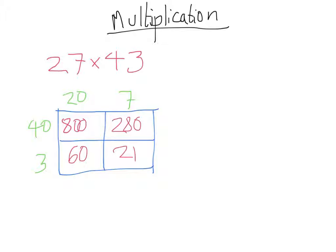Make sure you line up these numbers nice and neatly in a column to avoid any errors. So 800 add 280 add 60 add 21: 0 add 0 add 0 add 1 is 1, 8 add 6 is 14 add 2 is 16, and 8 add 2 is 10 add the extra 1 is 11, giving us 1161.